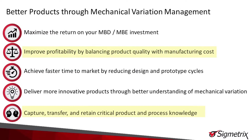And what are some of the ways that Sigmatrix helps customers design and build better products? We have five different areas that we focus on, but two that stick out right now are the idea of balancing cost and quality of that product, and the other one is helping companies capture, transfer, and retain critical product and process knowledge.